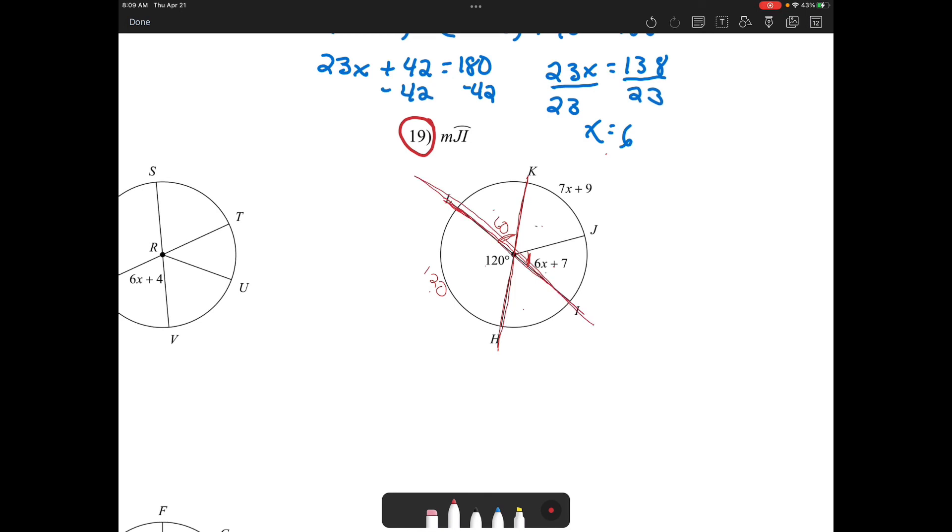Then the three of these have to be 180. So I would have 60 plus 7X plus 9 plus 6X plus 7 has to equal 180. And then I would solve for X. And once I solve for X, I would have to substitute that back in to get the angle.